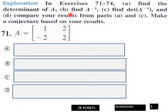For page one here we got A, B, C, and D, and C compare your results from parts A and C, make a conjecture based on your results. So we need to find the determinant of A, find the inverse of A, find determinant of the inverse of A, and D compare your results from parts A and C. So you need to write down here your comparison of that, and you got eight points here on page one.